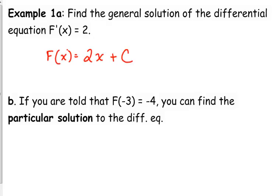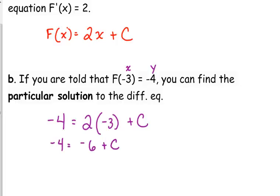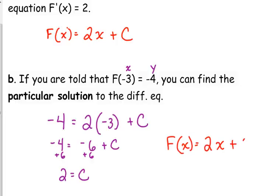Now if we are told that big F of negative 3 is equal to negative 4, then we can find the particular solution to the differential equation. I'm going to take my general solution and plug in the specifics. Negative 4 is my y-value, negative 3 is my x-value. So I set my equation equal to negative 4 when x is negative 3, and solve for C. Negative 4 equals negative 6 plus C. Adding 6 to both sides gives C equals 2. So our particular solution would be 2x plus 2.